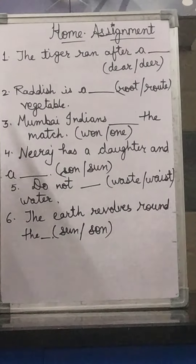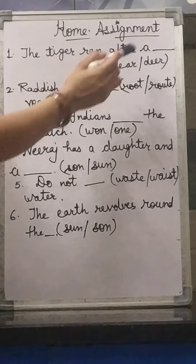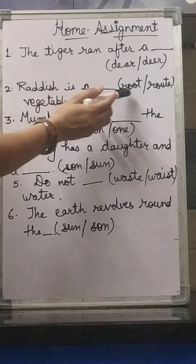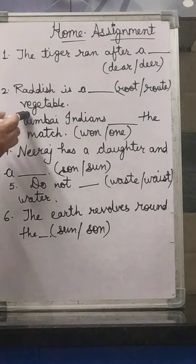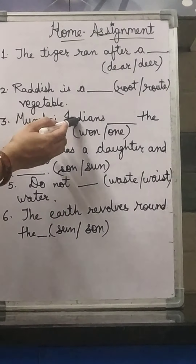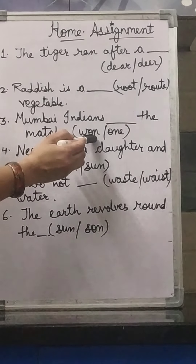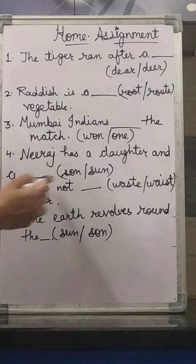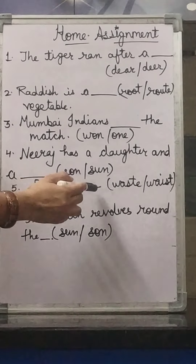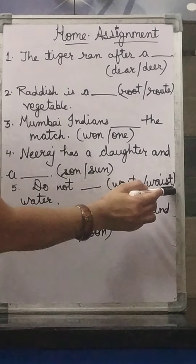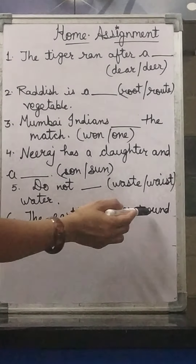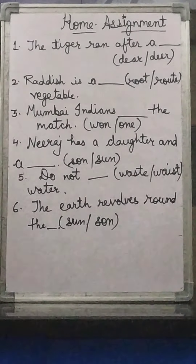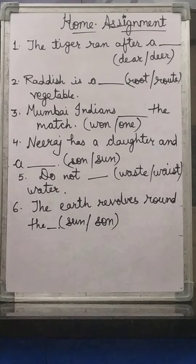Now it's time to do your homework. Fill in the blanks: Number one — 'The tiger R-E-I-G-N-E-D after...' choose the correct homophone. Number two — 'Radish is a R-O-O-T vegetable.' Number three — 'Mumbai Indians W-O-N.' Number four — 'Neha has a daughter and a S-O-N.' Number five — 'Do not W-A-S-T-E water.' And last — 'The earth revolves around the S-U-N.' You will complete this homework, and we will meet again in the next online class with a new topic. Thank you.